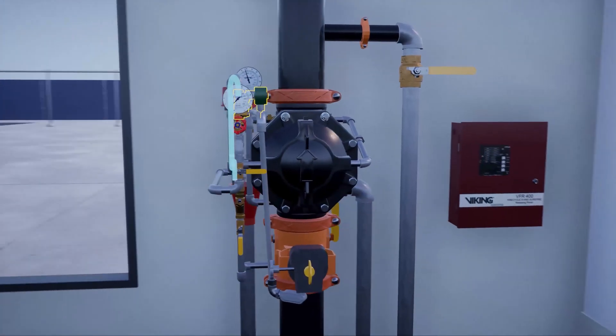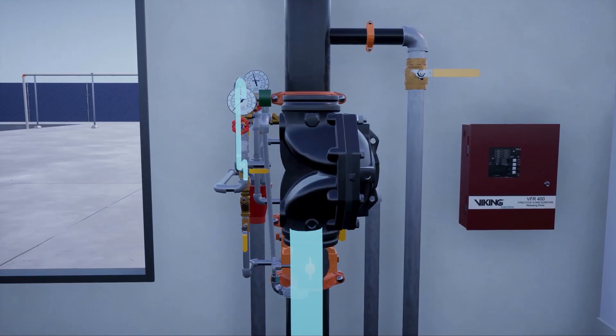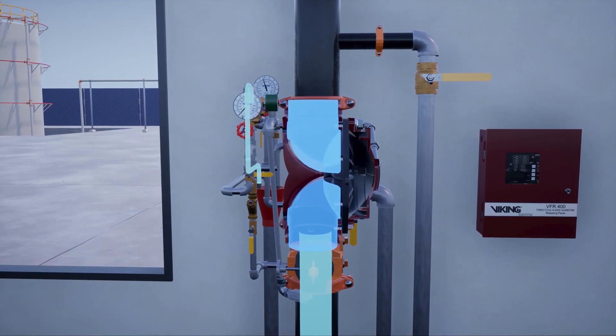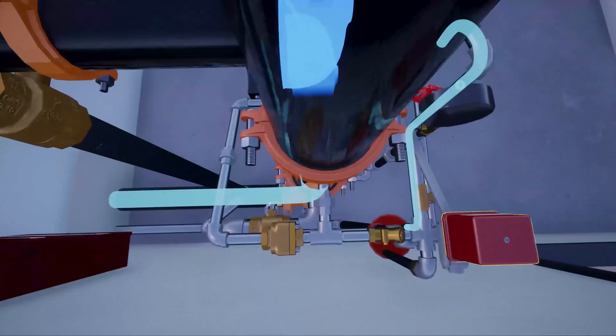The deluge valve's clapper opens and allows water to flow into the system piping. The water flow alarm is activated.